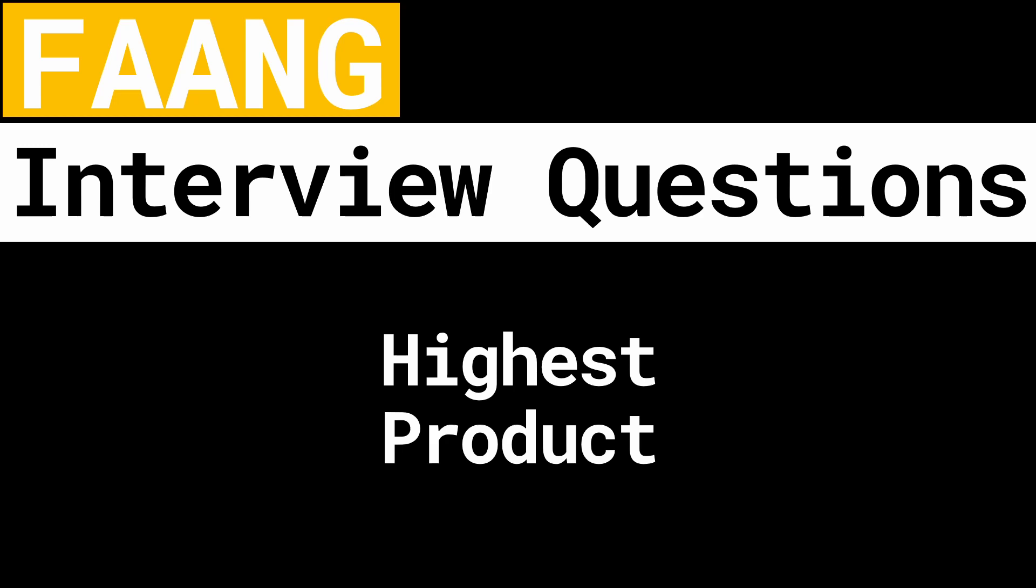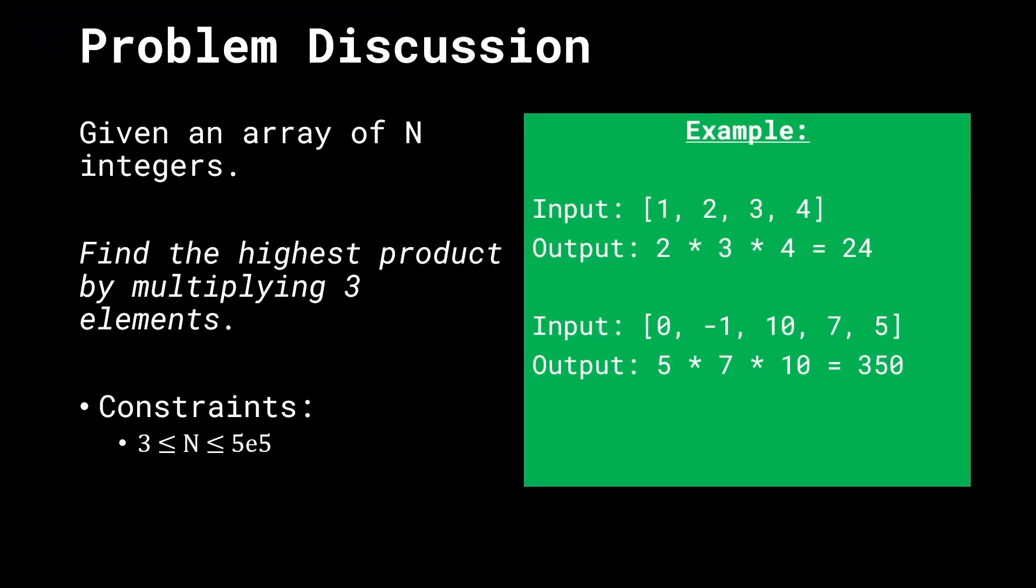Hello everybody and welcome. Let's talk about the problem 'Highest Product' on InterviewBit. We are given an array of N integers, and the goal is to find the highest product we can get by multiplying 3 elements. We can pick any 3 elements from the array. The constraints mention that N, the number of elements, can be between 3 and 5×10^5.